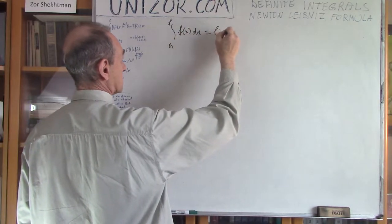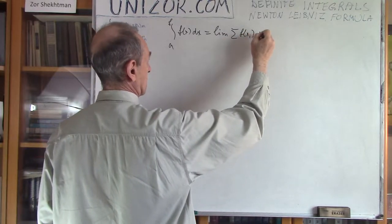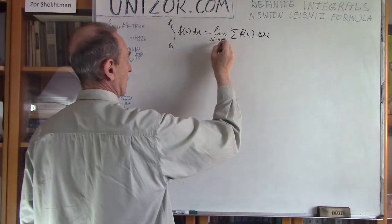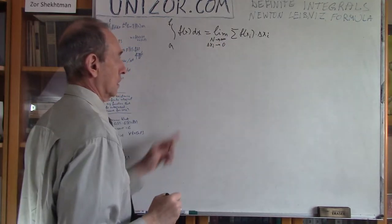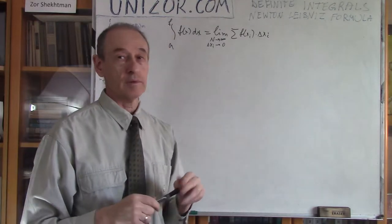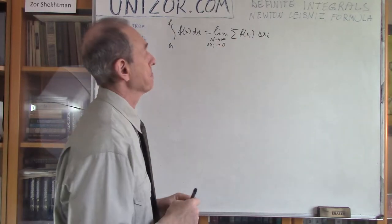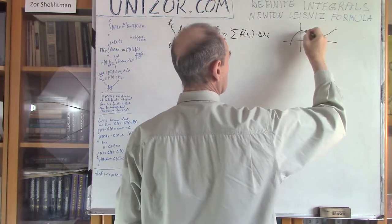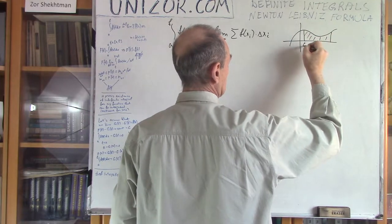We define the definite integral as the limit of a sum of expressions, where the number of intervals goes to infinity and all intervals we are dividing segment AB into are shrinking to null intervals. That's the definition. Graphically, the integral is actually the area under the curve.